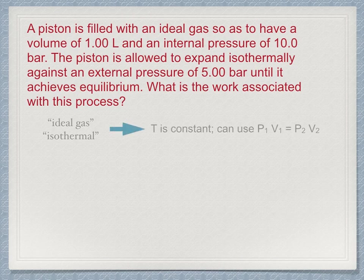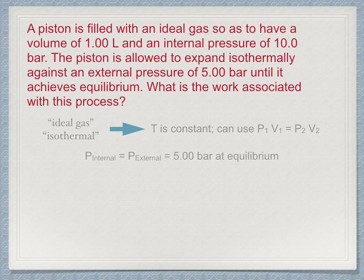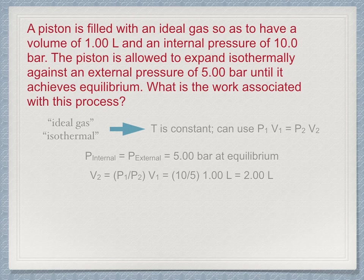Equilibrium will be achieved when the internal pressure matches the external pressure. Because it is isothermal, we are allowed to use P1V1 equals P2V2 to find pressures or volumes as needed. So from that we find the final volume to be 2 liters. This makes sense. The pressure is cut in half so the volume must be doubled. The change in volume is 1 liter.